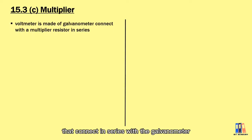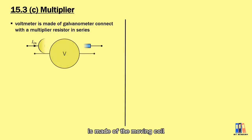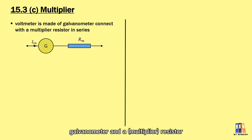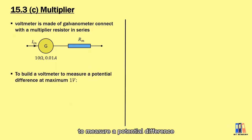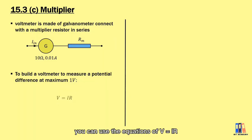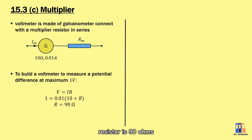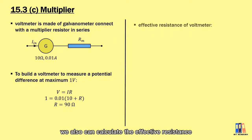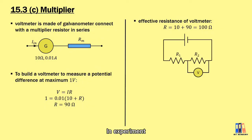Next, we talk about the multiplier, which is a resistor that connects in series with the galvanometer to build a voltmeter. The voltmeter you have in the lab is made of the moving coil galvanometer and a multiplier resistor. Let's say we still use the same galvanometer and want to build a voltmeter to measure a potential difference with full-scale deflection of 1 volt. Using V = IR with the current I limited to 0.01 ampere, we substitute all values and calculate the multiplier resistor as 90 ohms.